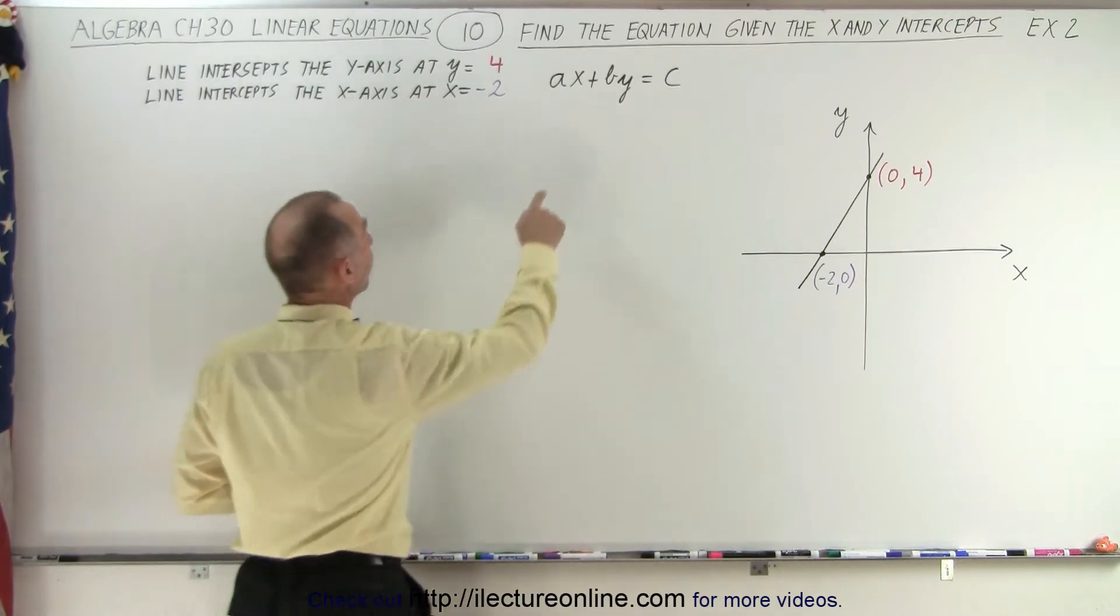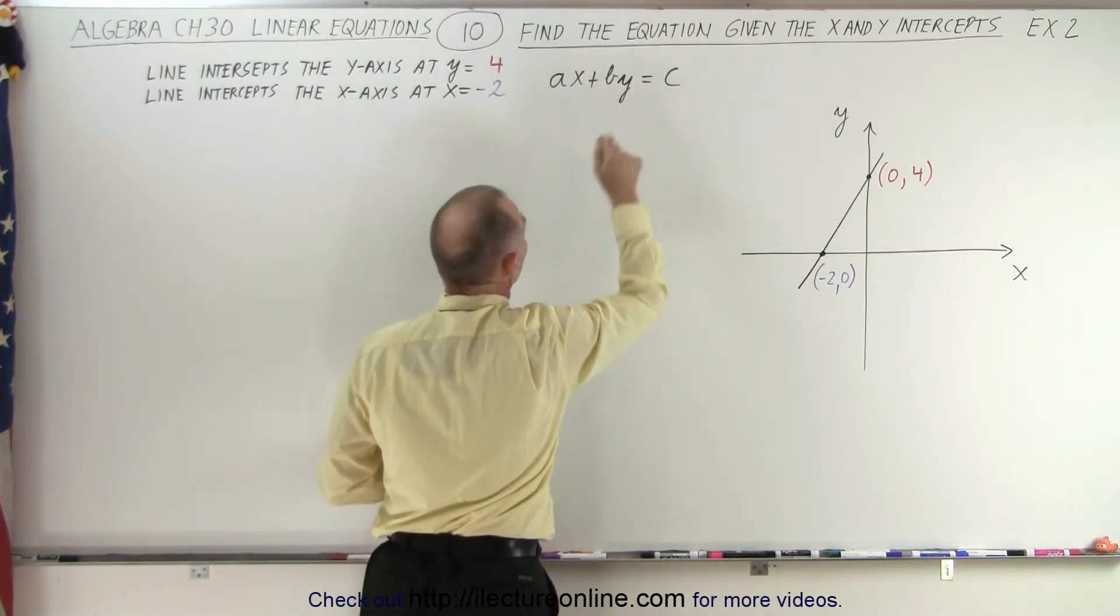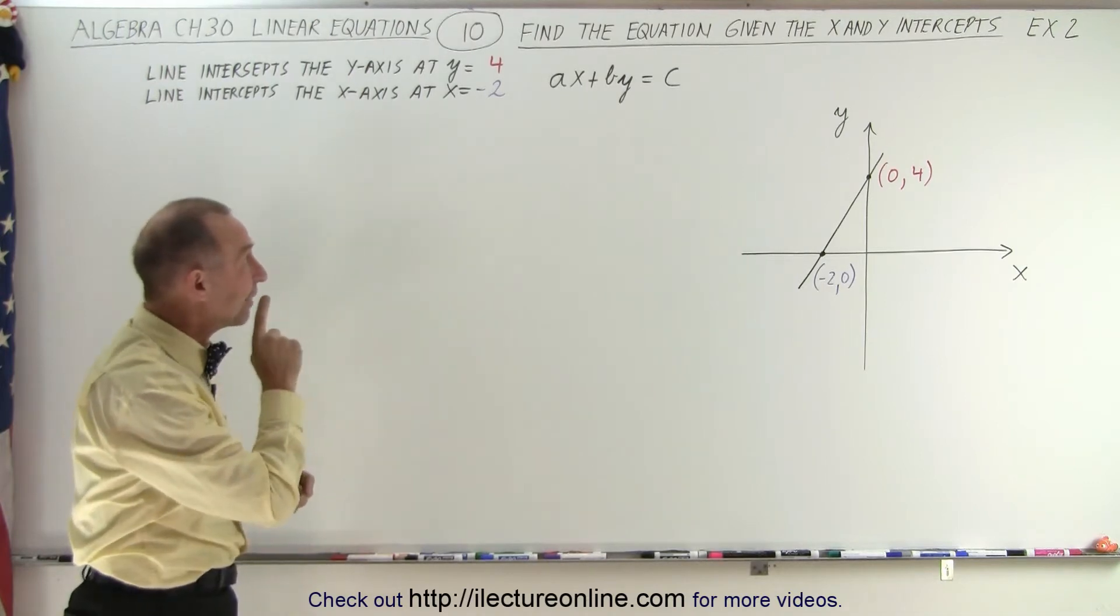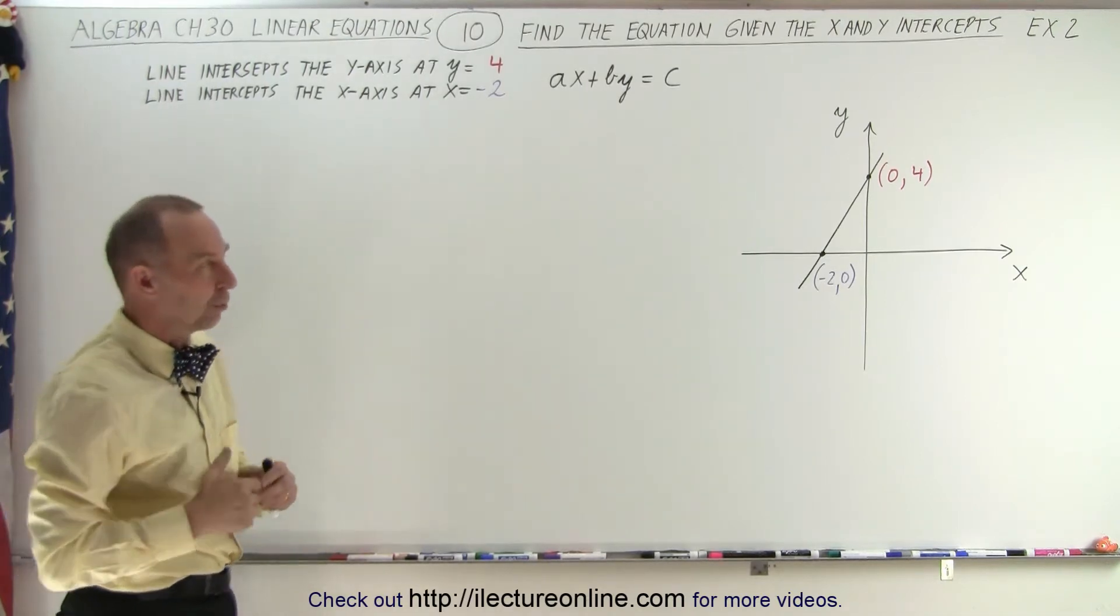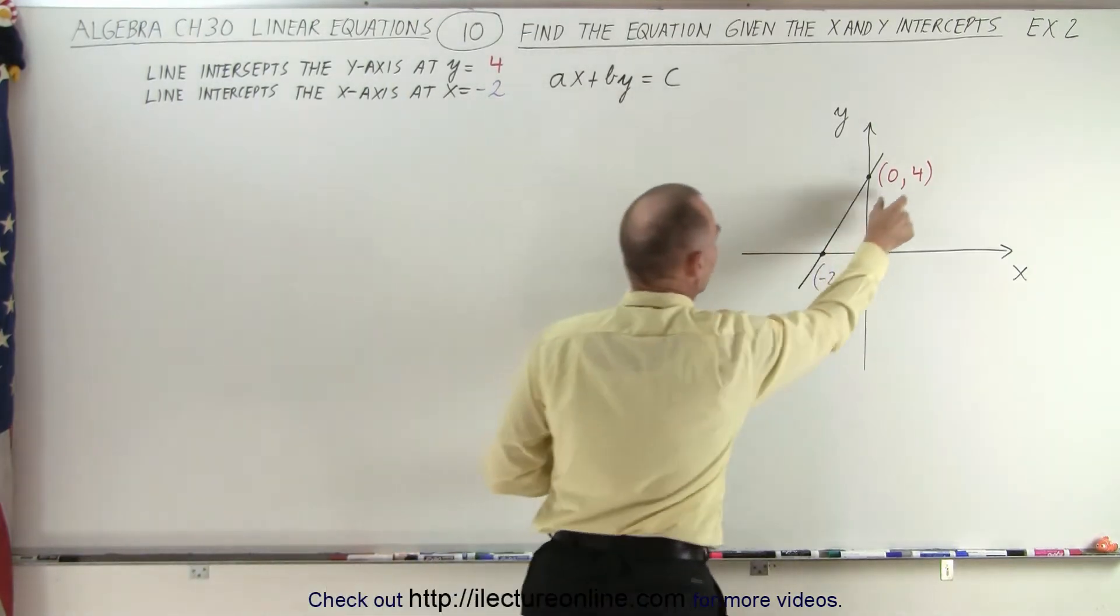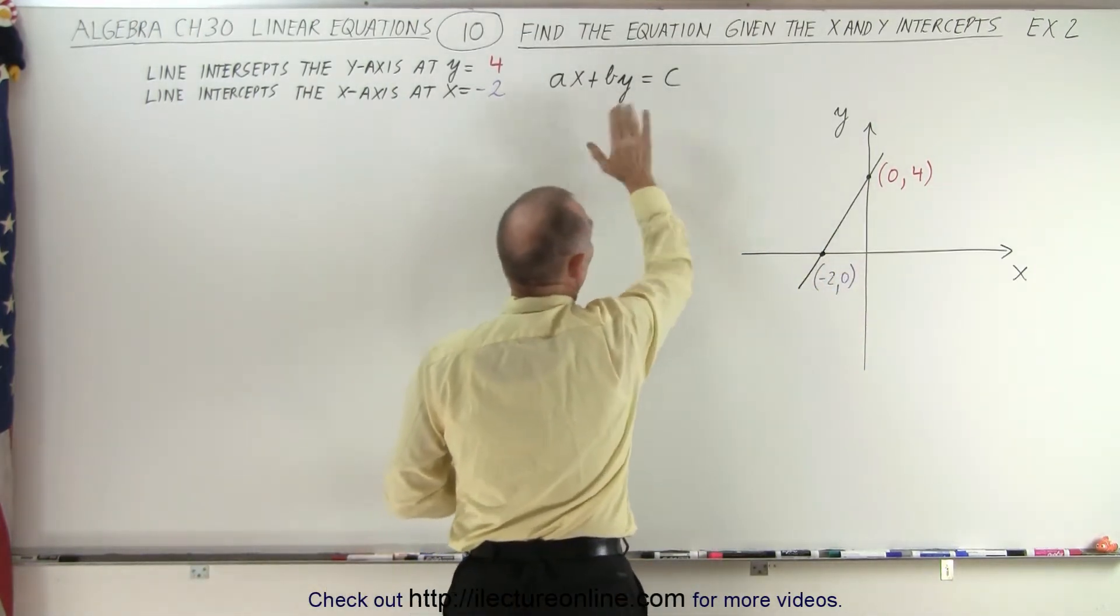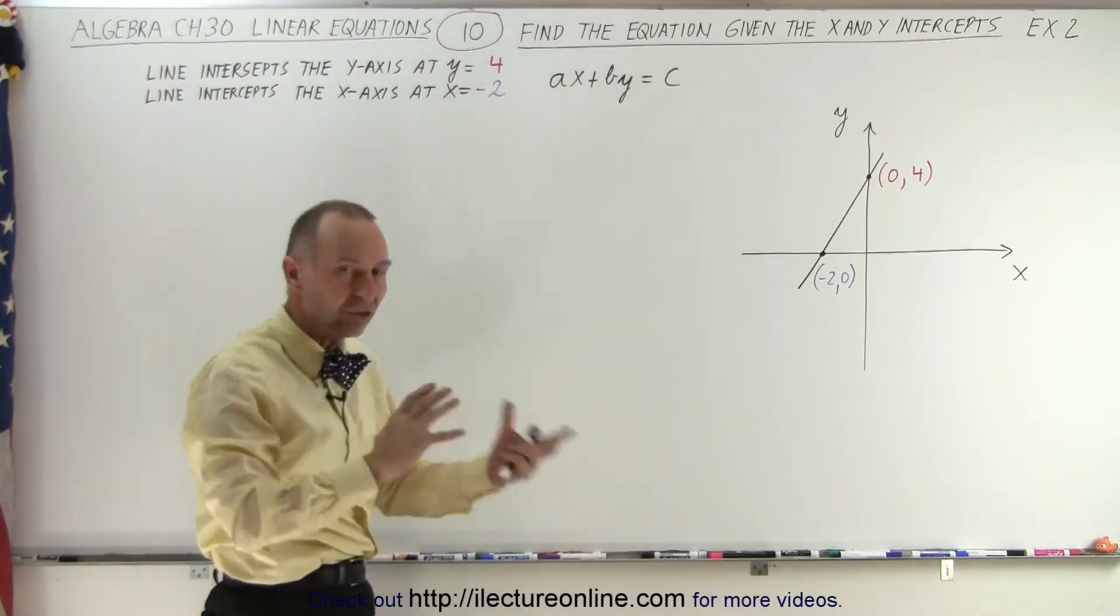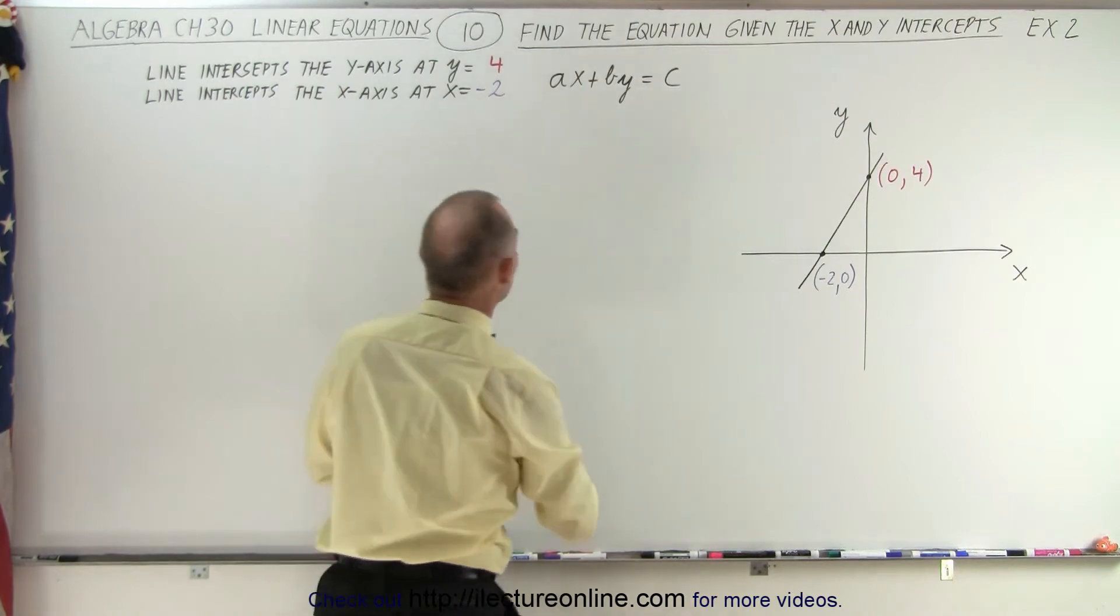We are given the general form of the equation ax plus by equals c. So to find the equation of that line we need to find a, b, and c. First, we're going to plug in the x and y values of the two points in our general equation, subtract one equation from the other to eliminate c, and then find a relationship between a and b.